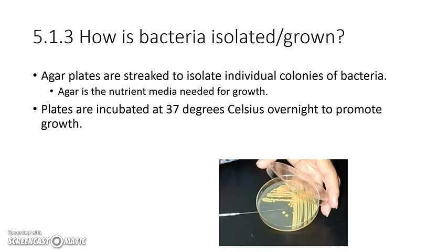So how do we grow bacteria in order to look at it or identify what kind it is? We use something called agar or an agar plate — it's a nutrient broth that allows bacteria to grow and reproduce on it. What they usually do is streak or rub the bacteria on it in a certain way in order to see individual colonies — just like colonies in geography, little areas where things accumulate and grow.